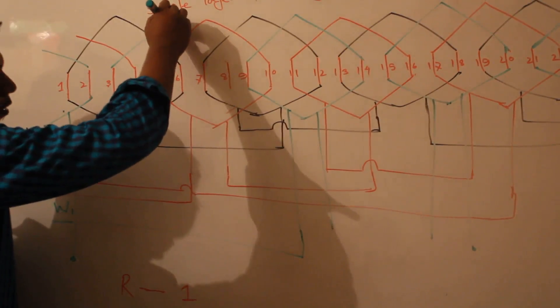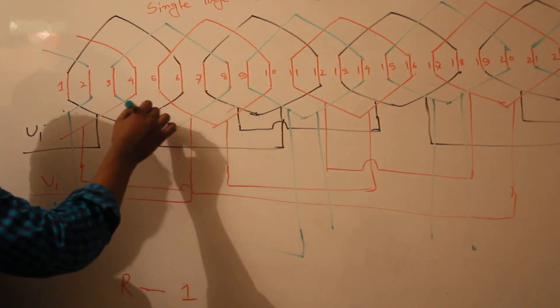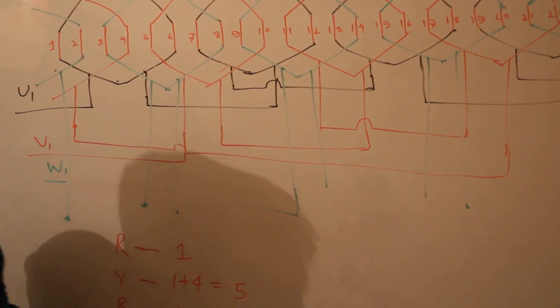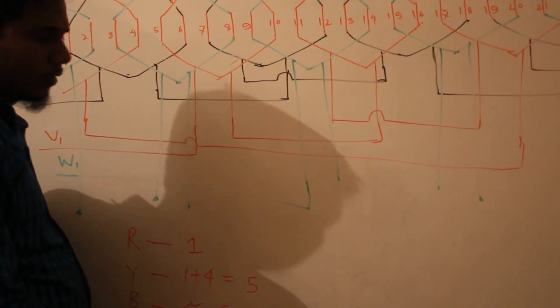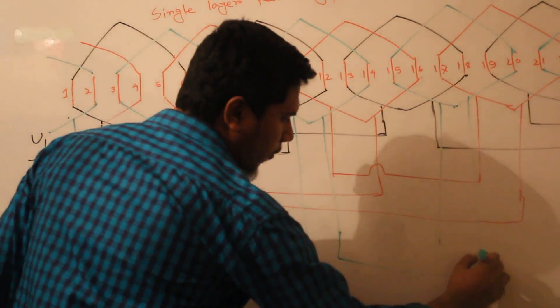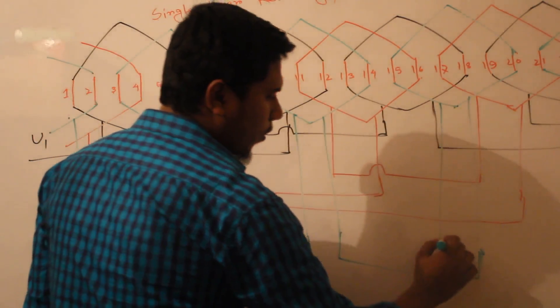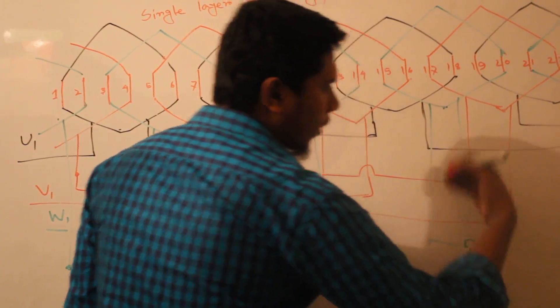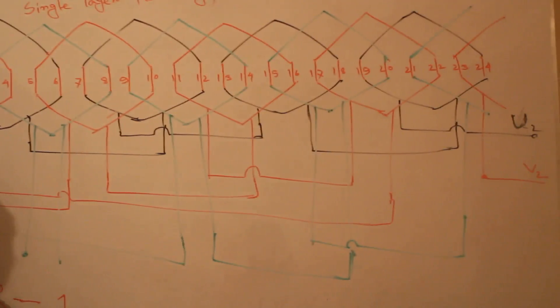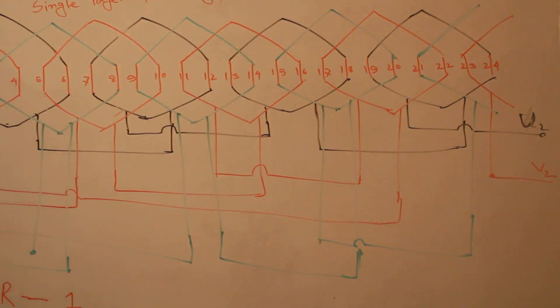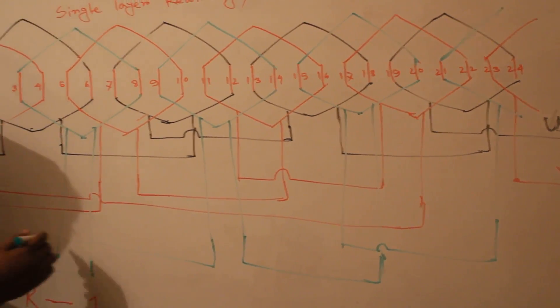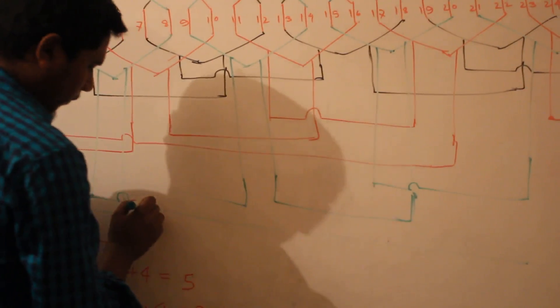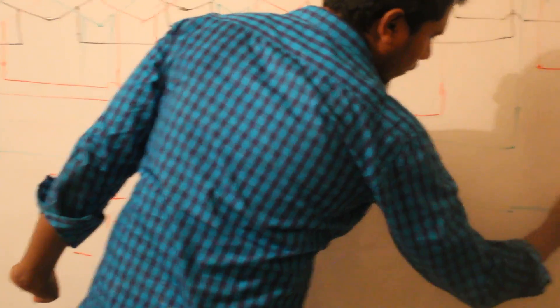Now I connect coil to coil. Here is the first coil of B phase — its last terminal connects to the next coil's last terminal. This second coil's first terminal connects to the third coil's first terminal. This third coil's last terminal connects to the fourth coil's last terminal. This is the fourth coil, and this fourth coil's starting terminal — we get here a terminal which is W2.